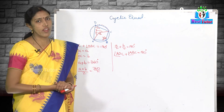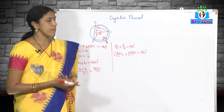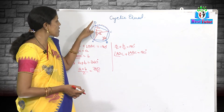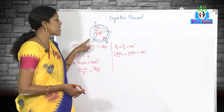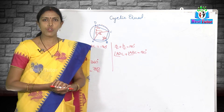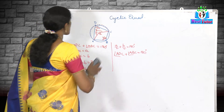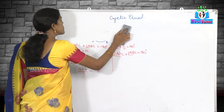Similarly, we can prove that angle DCB plus angle DAB is equal to 180 degrees. Now moving on to the next property of the cyclic quadrilateral.